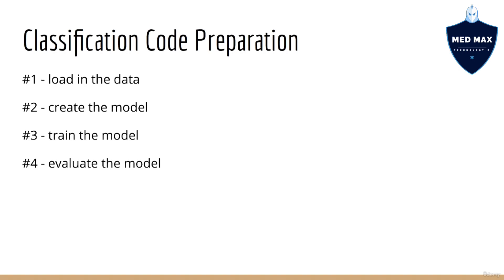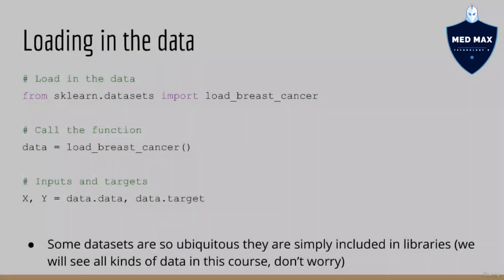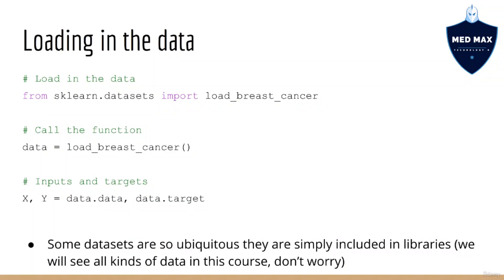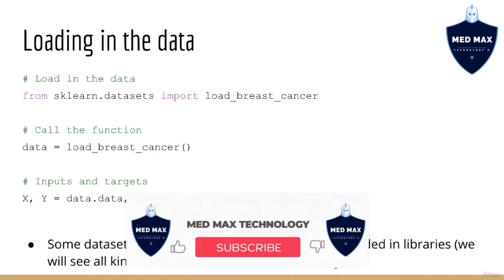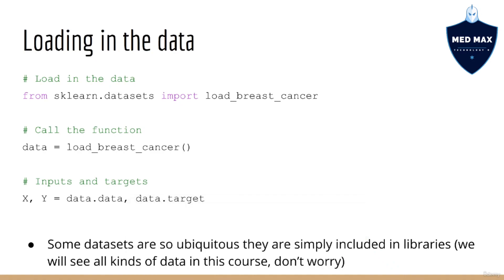Let's start with loading in the data. For this example we'll be looking at the famous breast cancer dataset. This dataset happens to be included as part of the scikit-learn API. You'll notice that in this course we'll be looking at quite a few pretty famous datasets. These datasets are so famous that they are often included in various machine learning libraries, so there's no need to download the dataset as we did in our previous example.